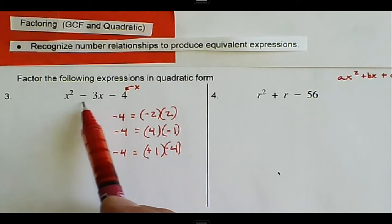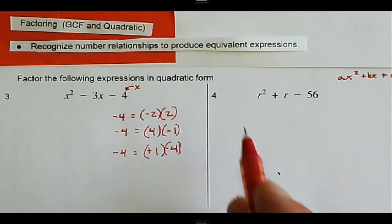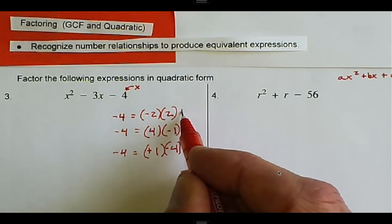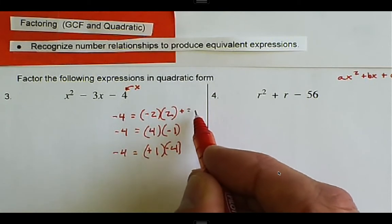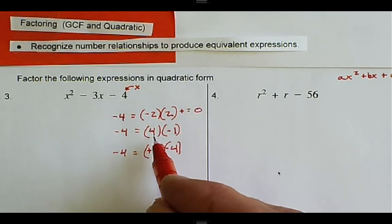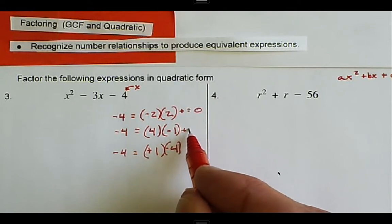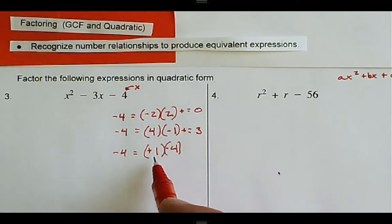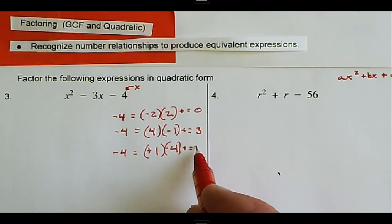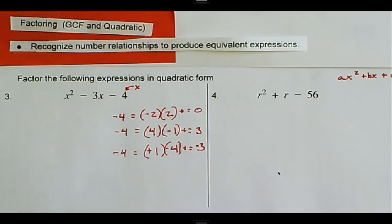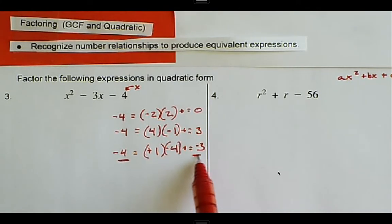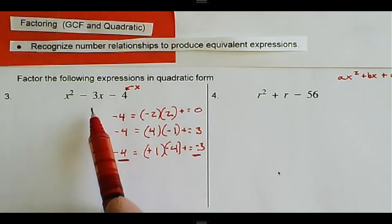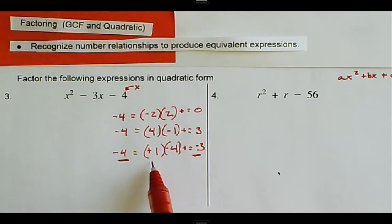In order to pick the correct terms for our factored form, they also have to add to negative three. Negative two plus two equals zero; four minus one equals three; and one minus four equals negative three. So we see that one and negative four are the terms we need.